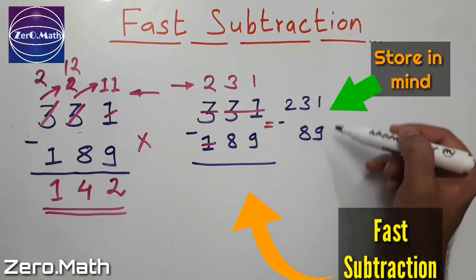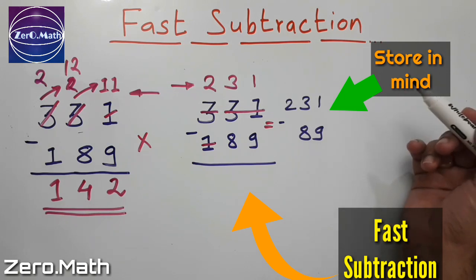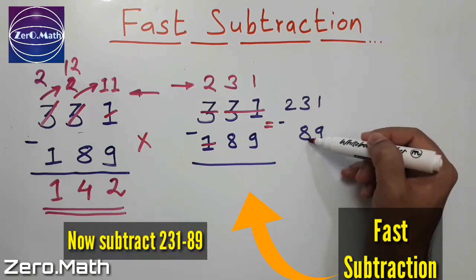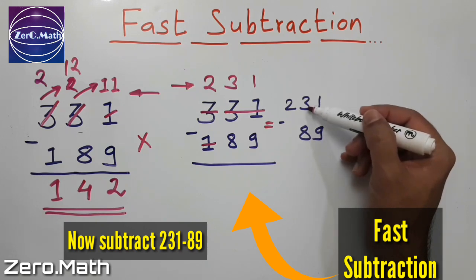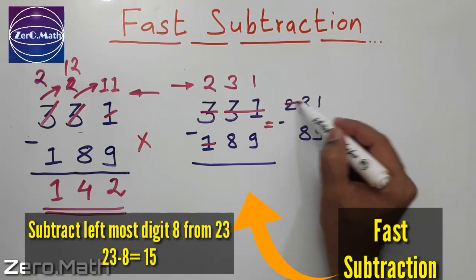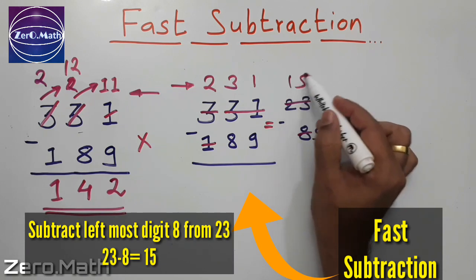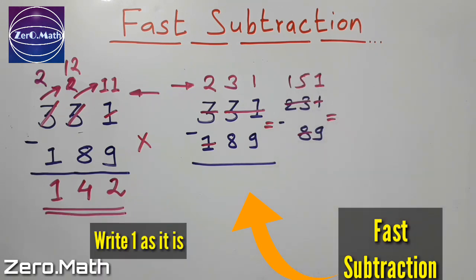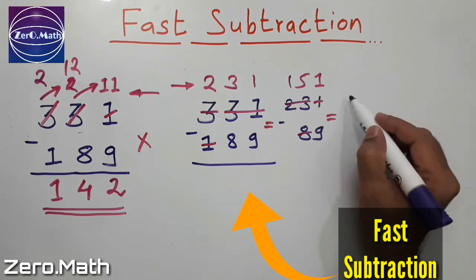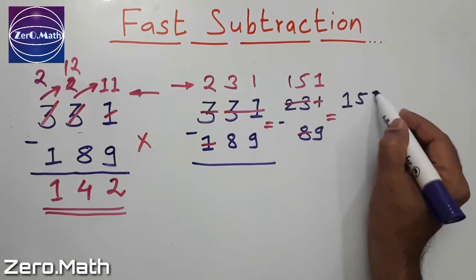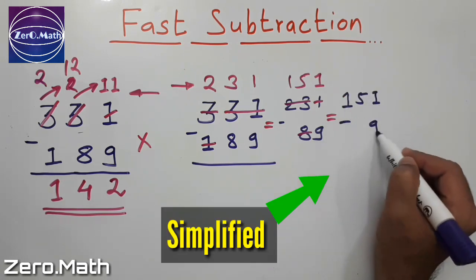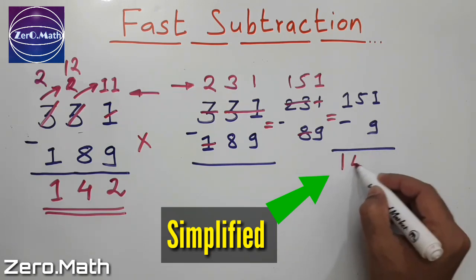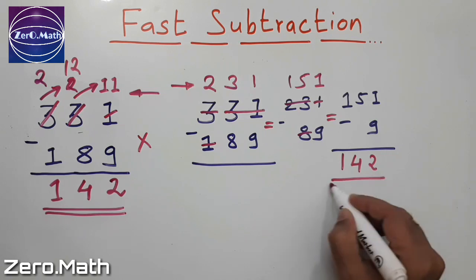This 231 and 89 you have to keep in your mind. Again take the leftmost digit, that is 8, subtract 8 from 23. So 23 minus 8 is 15. Take this 1 as it is. Now we have simplified our problem statement further to 151 minus 9, which is equal to 142, which is nothing but our answer.